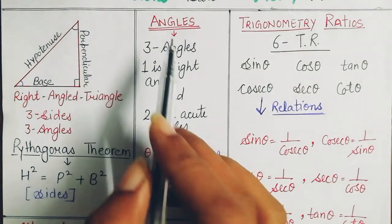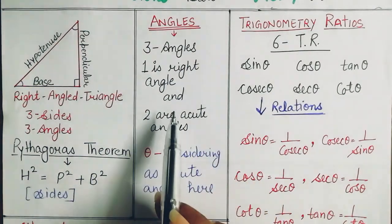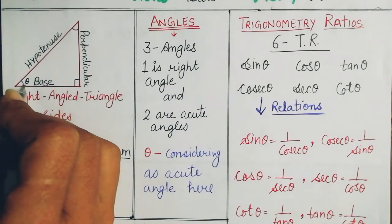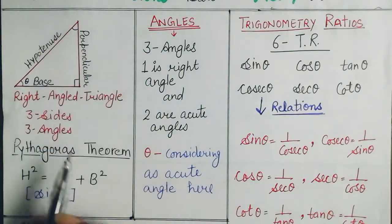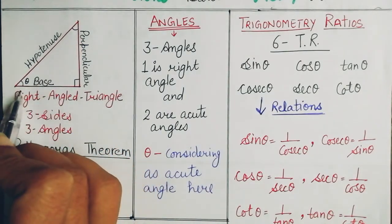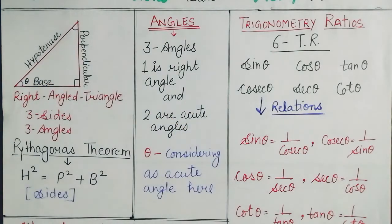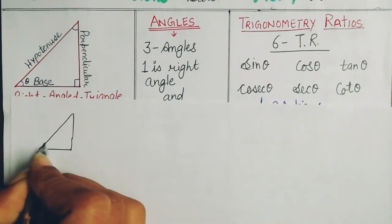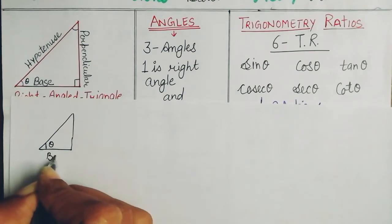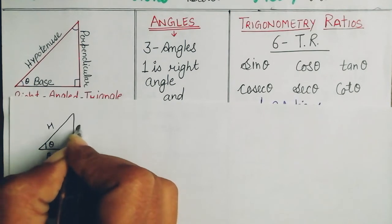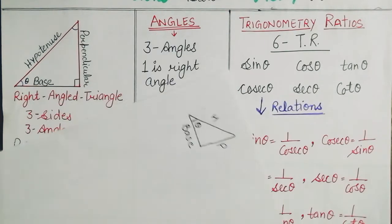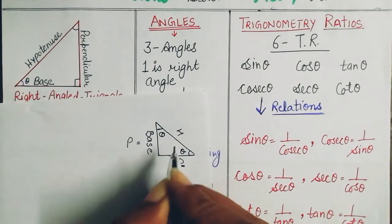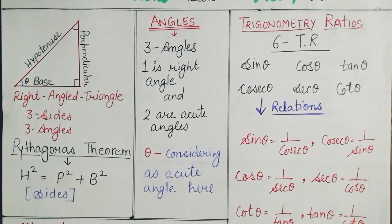Now let's look at the angles. There are three angles: one right angle and two acute angles. The angle theta depends on which side you take as base. The hypotenuse always forms theta with the base. So if one side is base, theta will be at that angle; if you take the other side as base, theta will shift accordingly.